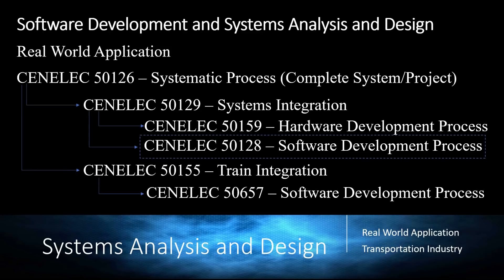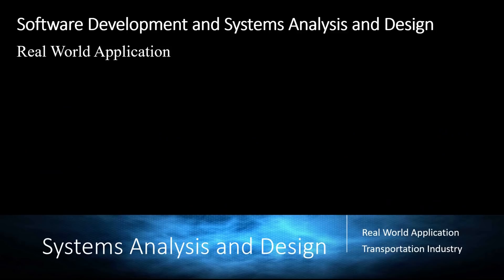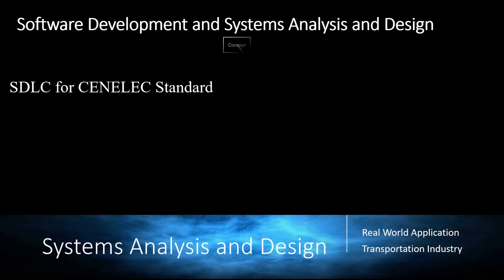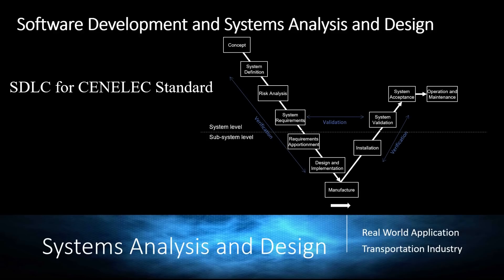Comparing SDLC to the Cenelec standard, we look at what's called the V development model. Every system level has a subsystem level — a breakdown of the higher system into smaller components. Looking at the V concept for SDLC and the Cenelec standard, we see they start with concept, system definition, risk analysis, and system requirements. At the system level, we then go to system validation, system acceptance, operation and maintenance, and finally deployment. The subsystem level applies to every system beneath the system level, where we analyze requirements, design and implementation, then manufacture, install, and return to the system level for validation, acceptance, and operation and maintenance.